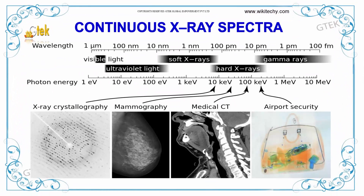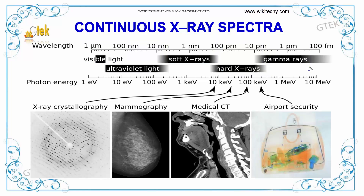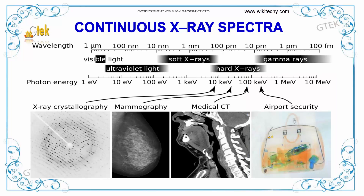If you talk about continuous spectra, you are able to see the spectra here. This is the wavelength of visible light; here it's ultraviolet, soft X-rays, hard X-rays, and gamma rays. This zone is used for airport security to identify threats. This area is used for medical CT, this area for mammography, and this area for X-ray crystallography.